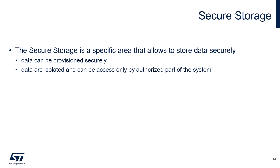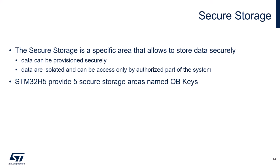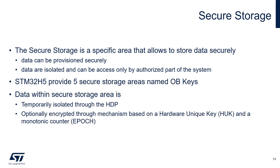Another new security feature of the STM32H5 is the Secure Storage — a specific area where data can be provisioned in a secure way, isolated and accessible only by authorized parts of the system. There are five different secure storage areas in the STM32H5, called Secure Storage OB keys — option byte keys. Each secure storage area and its associated data is isolated through the hide protection mechanism, and is optionally encrypted through a mechanism based on the hardware unique key and a 24-bit monotonic counter called epoch.